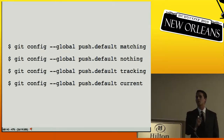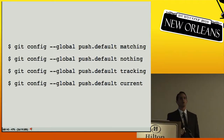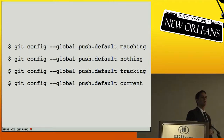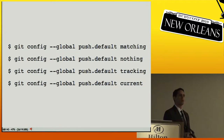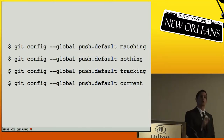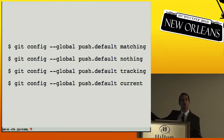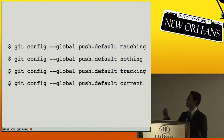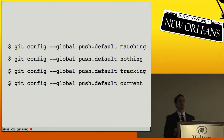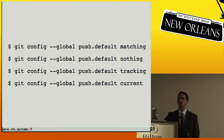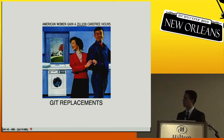You can change that behavior with `push.default`. Setting it to `nothing` means Git will error if you just say `git push origin`. Setting it to `tracking` does what you probably expect: pushes the current branch to whatever it's tracking, even if they have different names. Setting it to `current` pushes your current branch to a branch with the same name on the server, even without a tracking relationship.